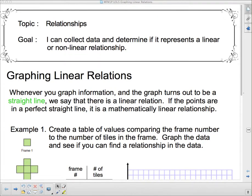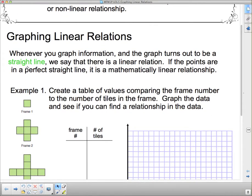Well hello 1P and welcome to our further discussion on relationships. We're going to be talking about graphing linear relations today. Our goal: I can collect data and determine if it represents a linear or nonlinear relationship. Whenever you graph information and the graph turns out to be a straight line, we say that there is a linear relation. If the points are in a perfect straight line, it is a mathematically linear relationship. If they just roughly form a straight line, it's still a linear relationship, but it's not mathematically linear because it's not a perfect mathematical relationship.